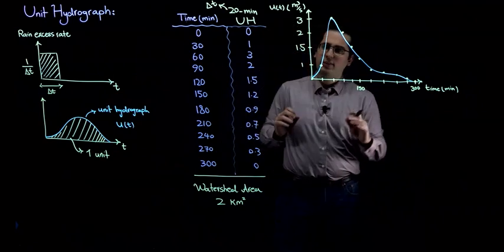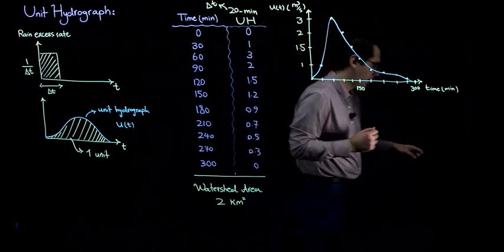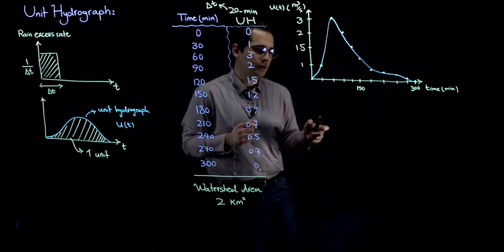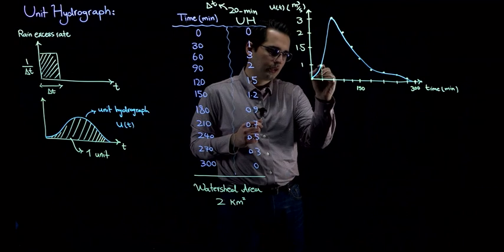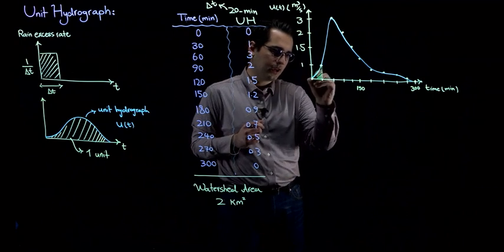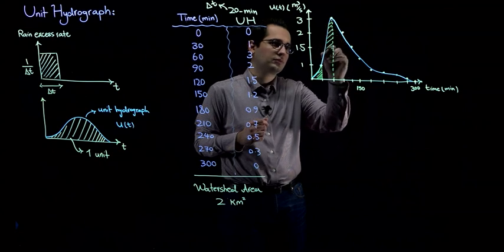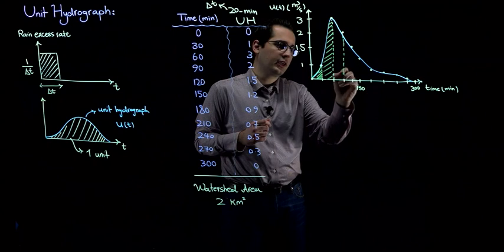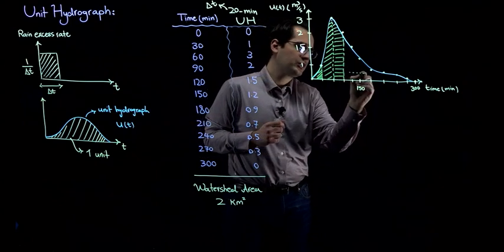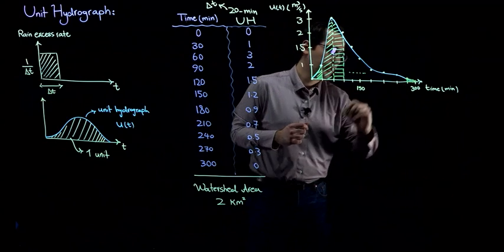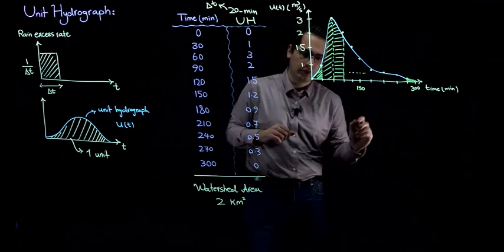We are going to verify that this is a unit hydrograph by calculating the area under it using numerical integration. We divide the hydrograph into different sections — for example, this first section is treated as a triangle, the next section as a trapezoid, and so on. The summation of all these areas all the way to the small triangle at the end gives the area under the unit hydrograph.